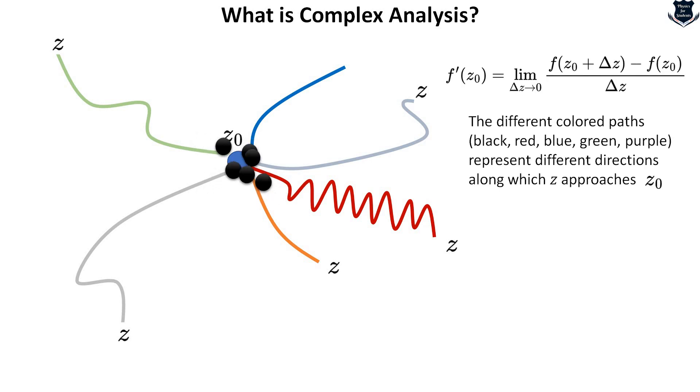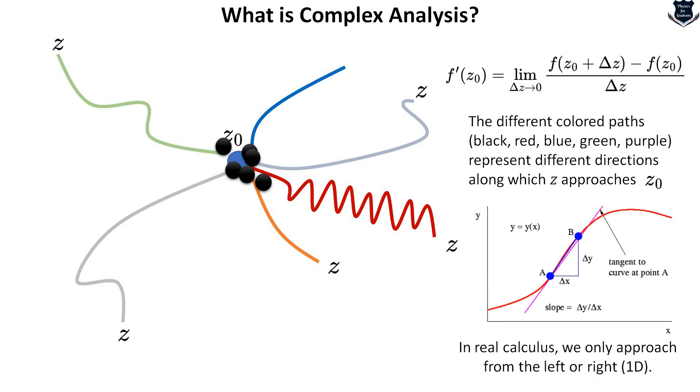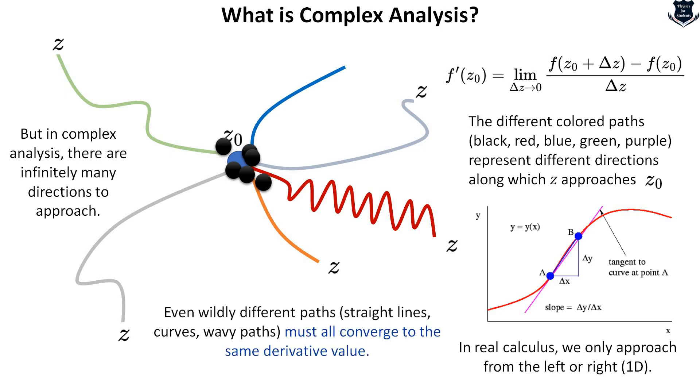Here the different paths approach zero. Remember that in real calculus we only approach from left to right in one dimension. But here in complex analysis there are infinitely many directions, so all of them have gone to zero and each and every direction, whether it is the moving path or wherever, the values are actually merging and going to the point zero. That is something very important.